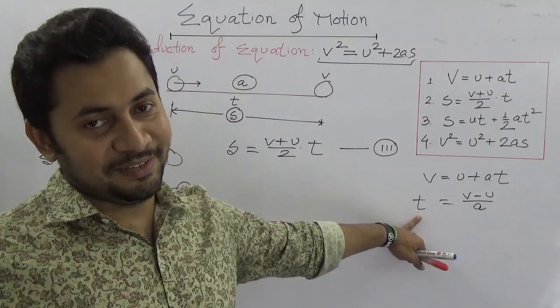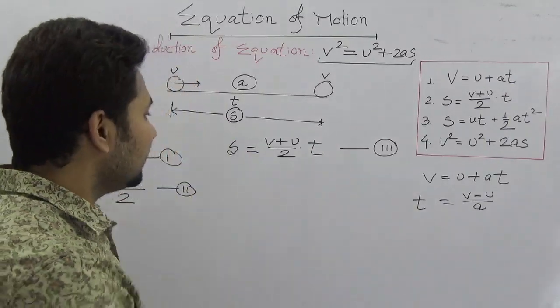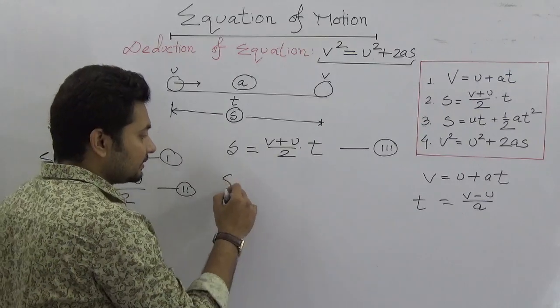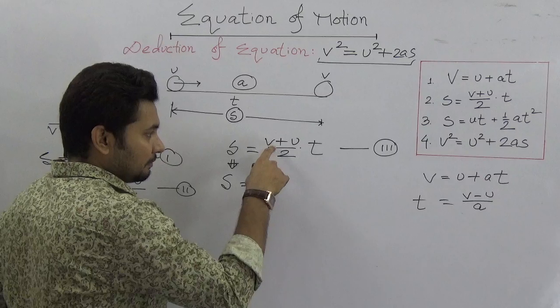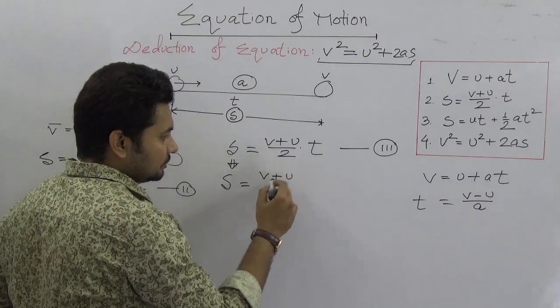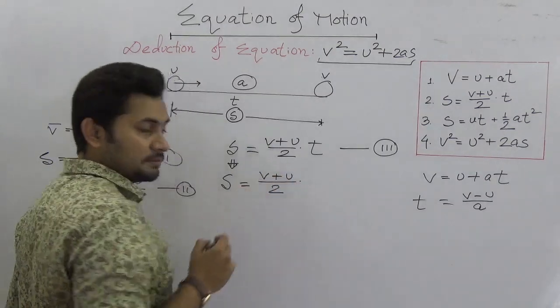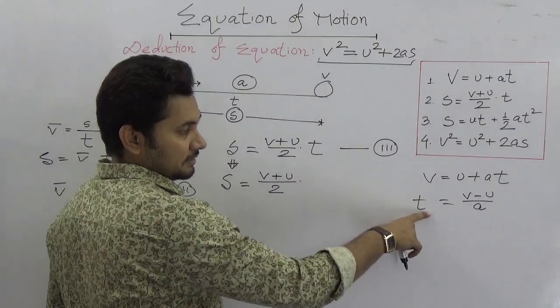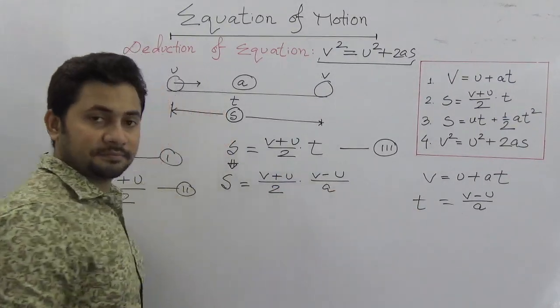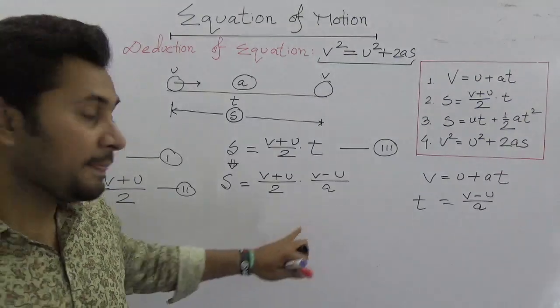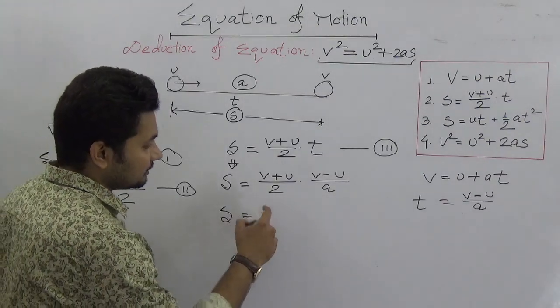We will just replace the value of t here. From equation 3, we will find s = (v + u)/2 × (v - u)/a, very simply.